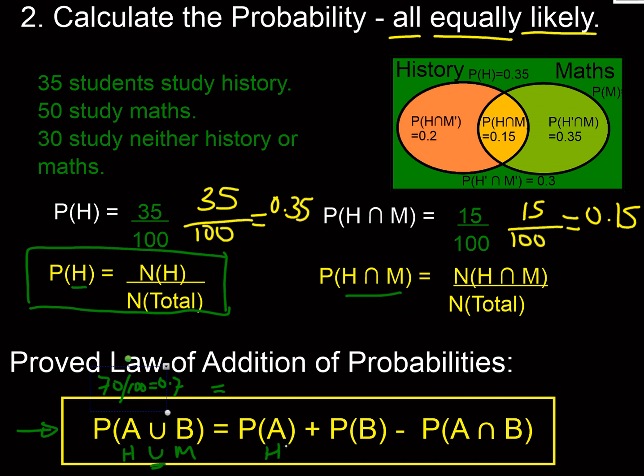We worked that out earlier: that was 35 students out of 100, so that's 0.35, plus the probability that you're doing maths. Well that was 50 out of 100, so that's 0.5.